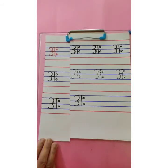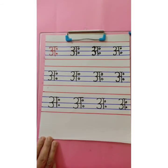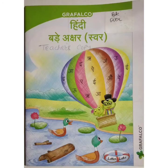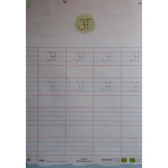Okay children, after completing the work, your page will look like this. This is your Hindi Grafalko Swar book — that is the GS book. Your today's Hindi home assignment is to complete page number 38. Write AHA, and while writing, say the svar. Complete your work neatly and write the date on the page. Bye, thank you.